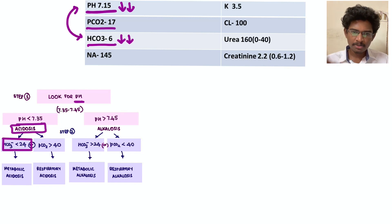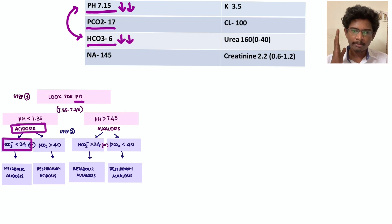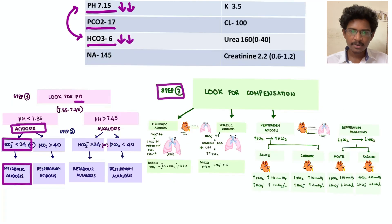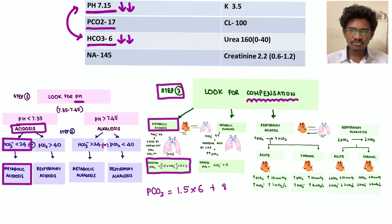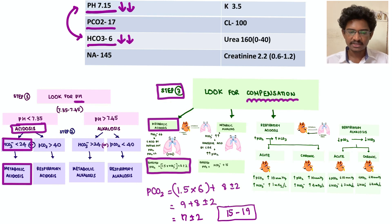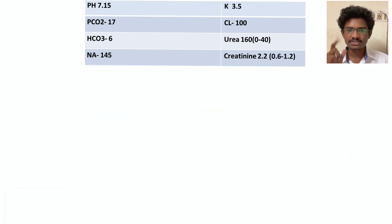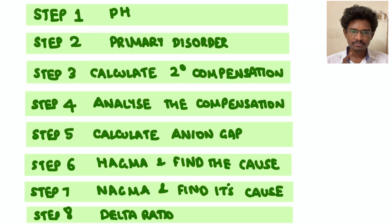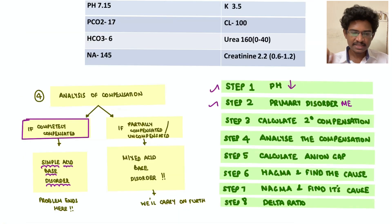Step two: bicarb is just 6, less than 24 — metabolic acidosis. Step three: compensation. Expected PCO2 = 1.5 × 6 + 8 ± 2 = 17 ± 2, so the range is 15 to 19. The given PCO2 is 17 — it lies within this range, so it is completely compensated.